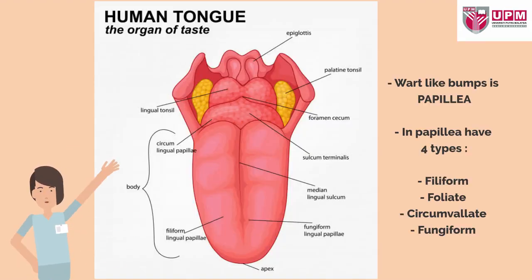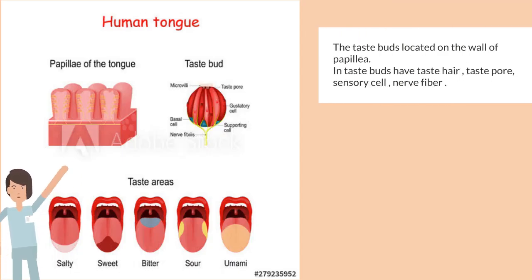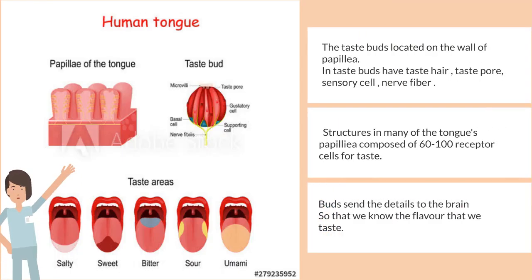Anatomy of the tongue. Its wart-like bumps are called papillae. Papillae have four types: filiform, foliate, circumvallate, and fungiform. The taste buds are located on the wall of the papillae. In the taste buds there are taste hair, taste pore, supporting cells, and nerve fiber. Structures in many of the tongue's papillae are composed of 60 to 100 receptor cells for taste. Buds send the details to the brain so that we know the flavor that we taste.